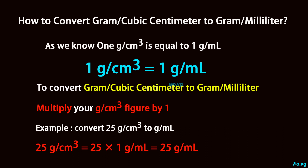To convert gram per cubic centimeter to gram per milliliter, multiply your gram per cubic centimeter figure by 1. Example: convert 25 gram per cubic centimeter to gram per milliliter. 25 gram per cubic centimeter equals 25 times 1, which equals 25 gram per milliliter.